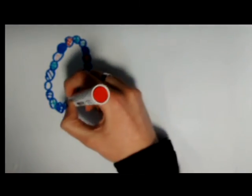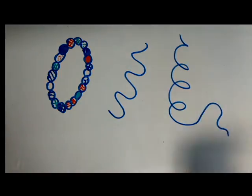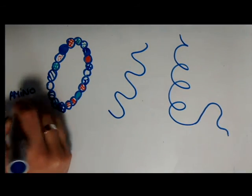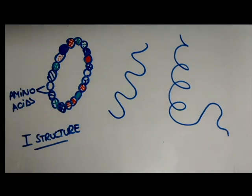It is then possible to fold parts of the necklace with different shapes such as zigzags or helix for instance. In biology, the pearls are called amino acids. The chain of amino acids is called the primary structure of the protein.